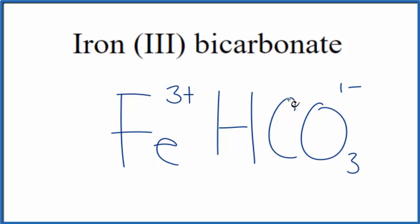So we have 3+ here, and 1- here. We need all of this charge to add up to zero. So if we put parentheses around the bicarbonate ion here, and we said we have three of them, 3 times 1- is 3-, that balances out the 3+.